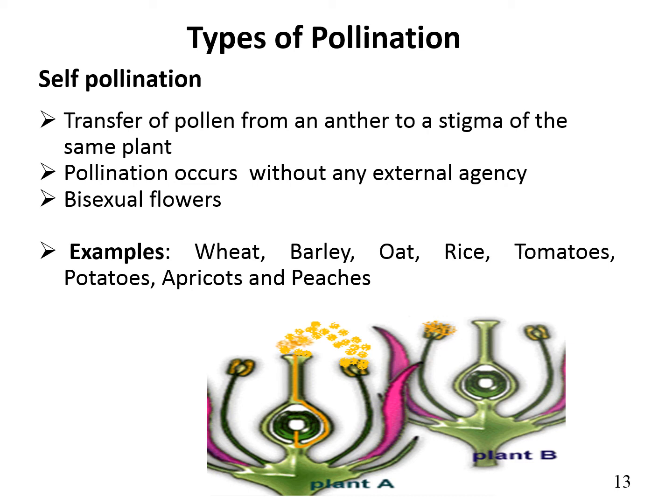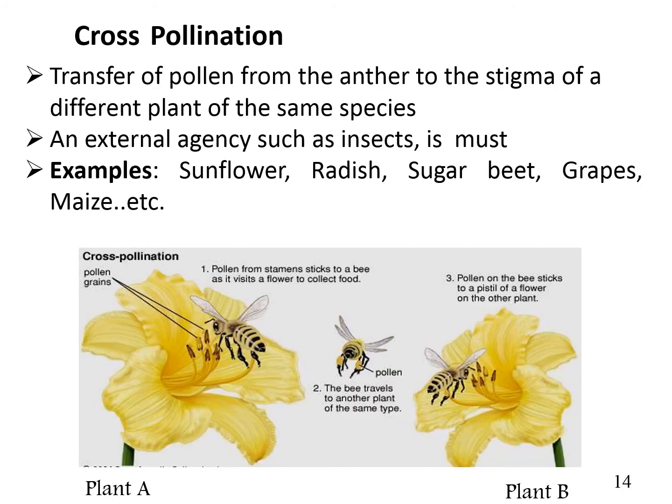Self-pollination takes place only in bisexual flowers. Examples include wheat, barley, rice, oats, etc. In cross-pollination, transfer of pollen occurs from the anther to the stigma of a different plant of the same species. In this case, an external agency such as an insect is required. Examples include sunflower, radish, sugar beet, maize, etc.